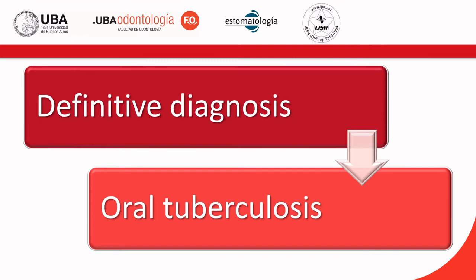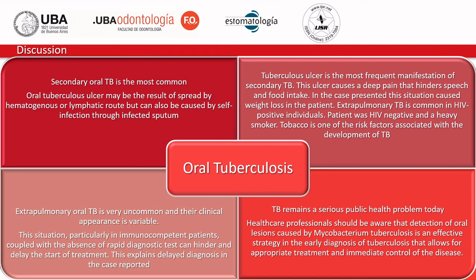Definitive diagnosis was oral TB. Oral TB lesions may be either primary or secondary in occurrence, and secondary oral TB is the most common. Oral tuberculosis ulcers may result from spread by hematogenous or lymphatic routes, but can also be caused by self-infection through infected sputum, as probably happened in the case reported.